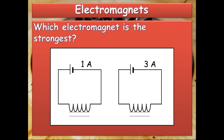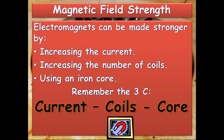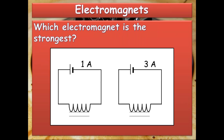Here's an easy example for you — which electromagnet is the strongest? The number of coils is the same in both. Here the current is one amp, and here the current is three amps. As I mentioned, if you increase the current, the strength of the magnetic field around the electromagnet increases. That's why in the second circuit the magnetic field around that electromagnet will be higher than the first one, because the current is higher.